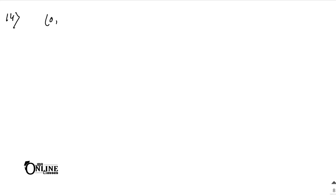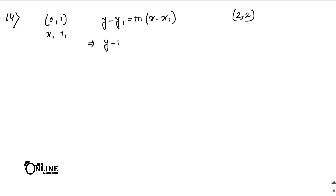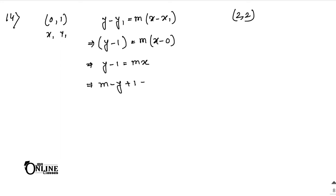In sum number 14: find the equation of the two straight lines drawn through the point (0, 1) on which the perpendicular dropped from the point (2, 2) is each of unit length. Unit length means 1. Since the line passes through (0, 1), let the equation be y minus y1 = m(x minus x1), so y minus 1 = m(x minus 0), giving y minus 1 = mx.